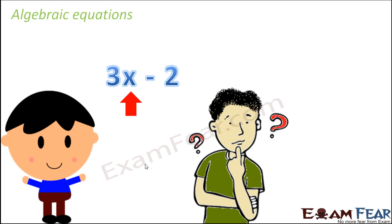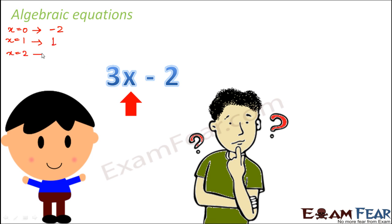Can you find out the value of x? In this case, x can be 0 — so if x is 0, the value of this expression will be 3 into 0 minus 2, that is minus 2. If x is 1, then the value is 3 into 1 minus 2, which is 1. If x is 2, then it is 3 into 2, that is 6 minus 2, that is 4. So we observe that we can put any value of x, but the moment the value of x changes, the overall value of the expression also changes.